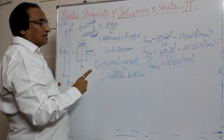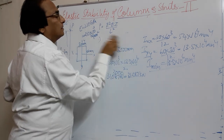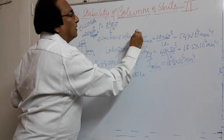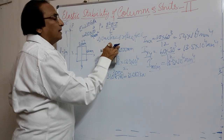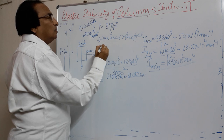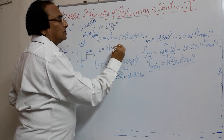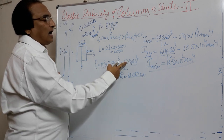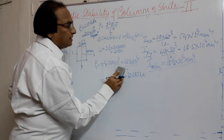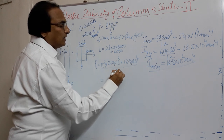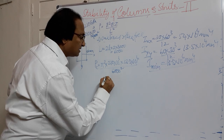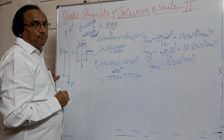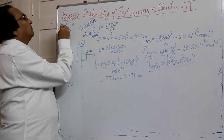The second condition is one end fixed, other end free. The formula remains the same; what changes is L. The effective length is 2L = 2 × 3000 = 6000 mm. Substituting: Pc = π²EI / 6000². If you simplify this, you get 7771 N, which is 7.771 kN. This is the load carrying capacity for the second condition.